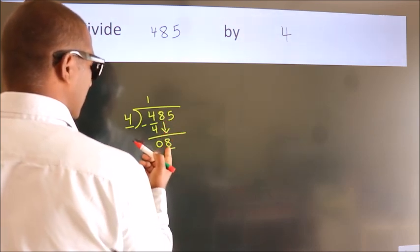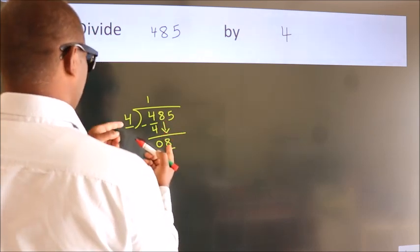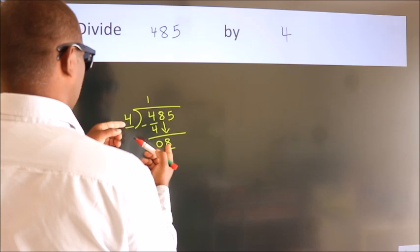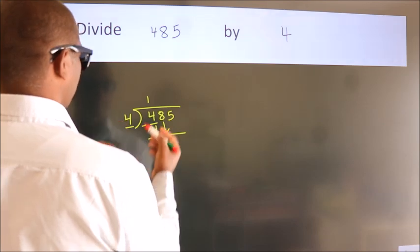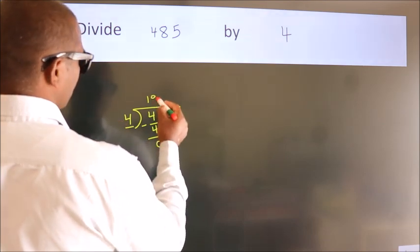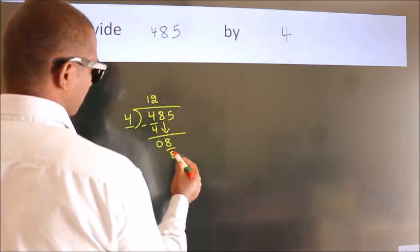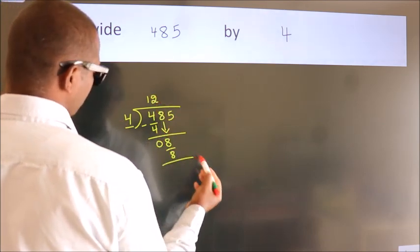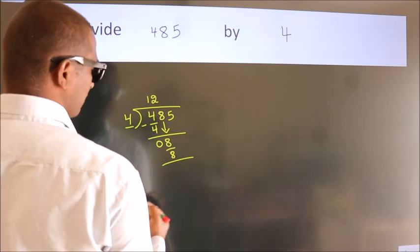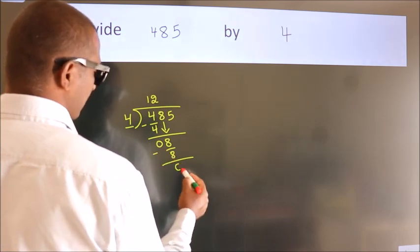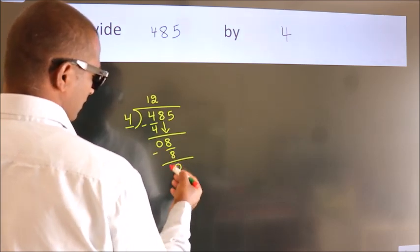When do we get 8? In the 4 table — 4 twos are 8. Now we subtract. We get 0.